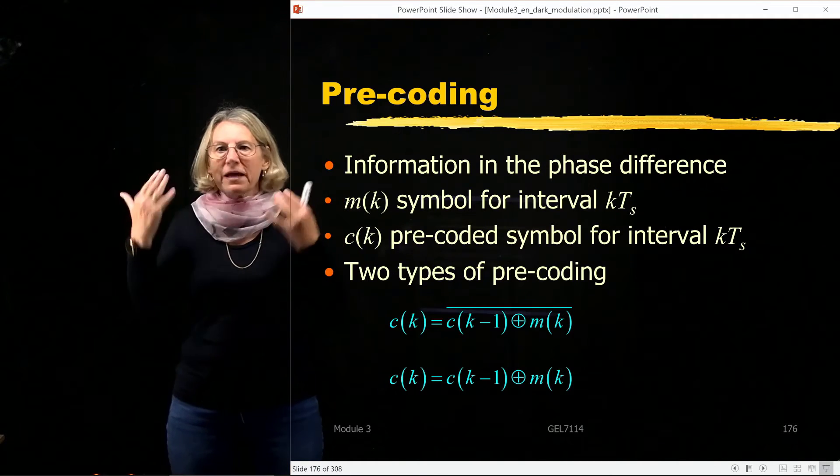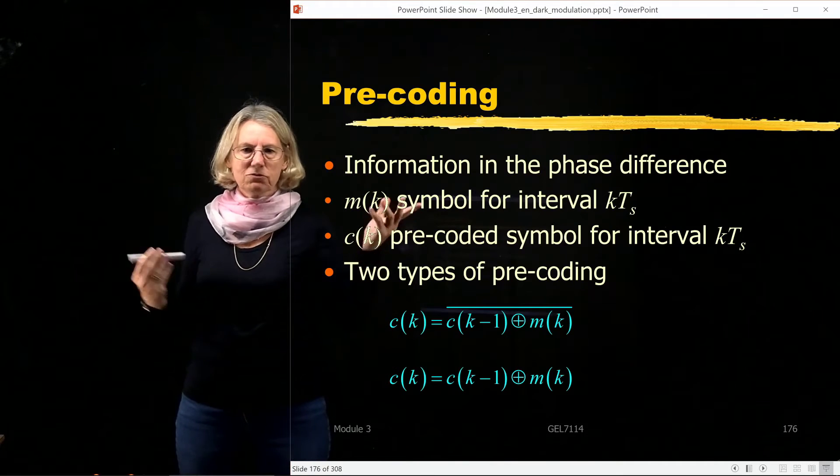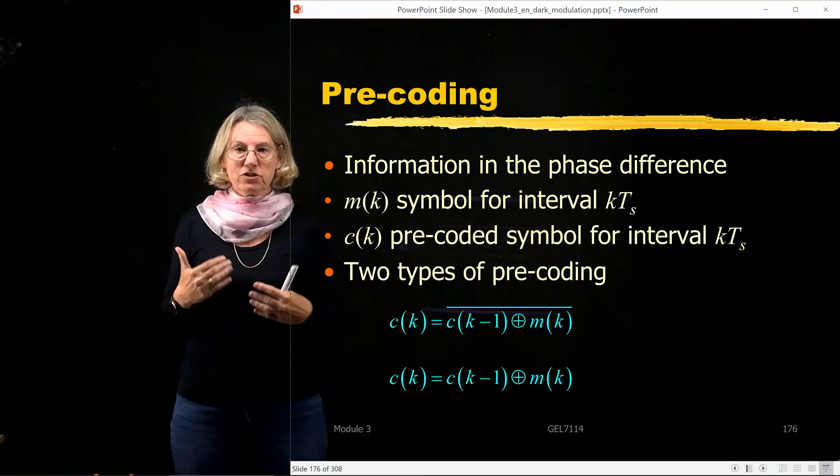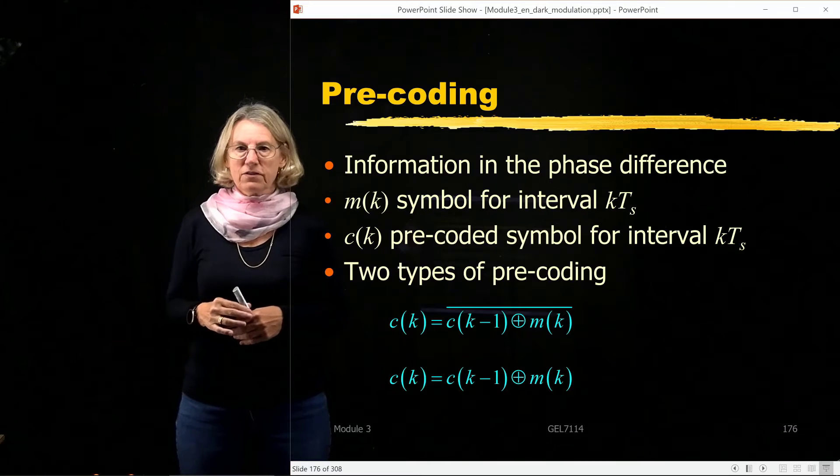So I'm coding the information in the phase difference. How do I do that? Well that's really easy. You pre-code the information so that your receiver structure doesn't matter whether you're using coherent detection or incoherent detection. So let me just take you through that.